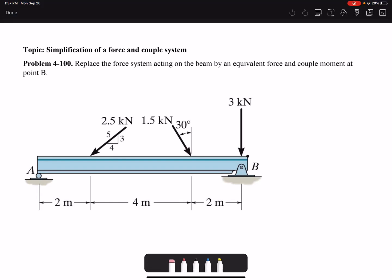Hello everyone, today we are going to solve problem 100 of chapter 4. Replace the force system acting on the beam by an equivalent force and couple moments at point B.